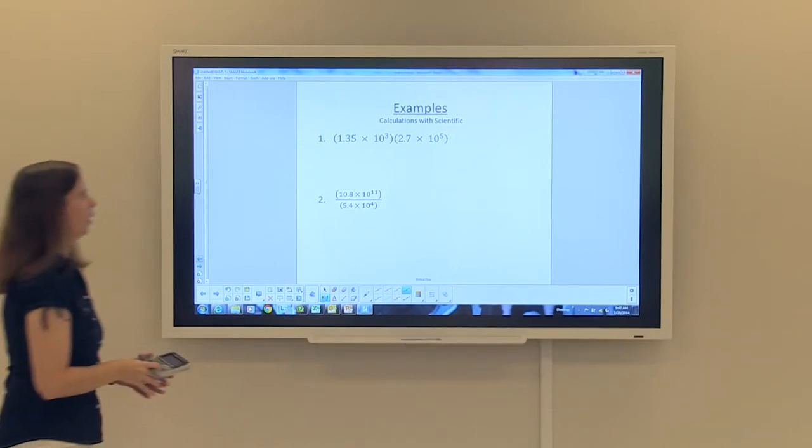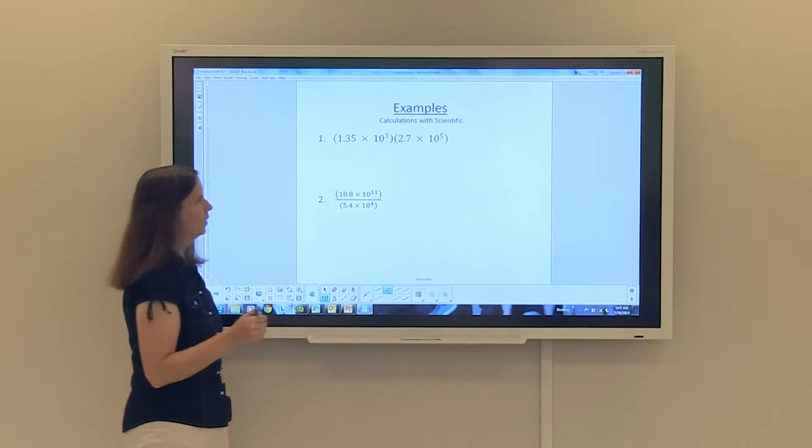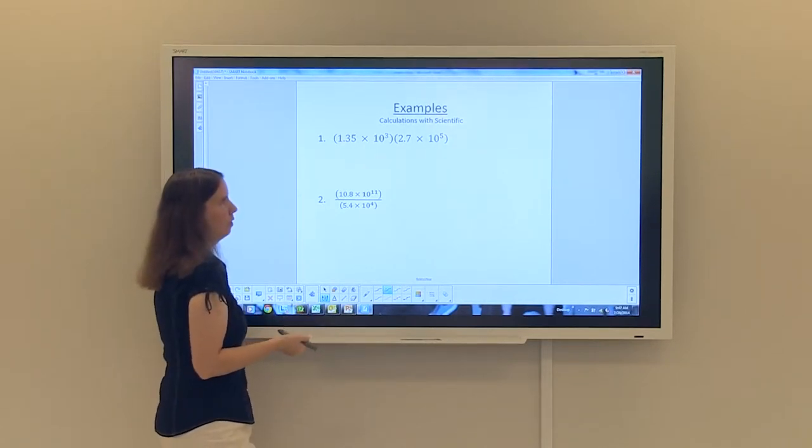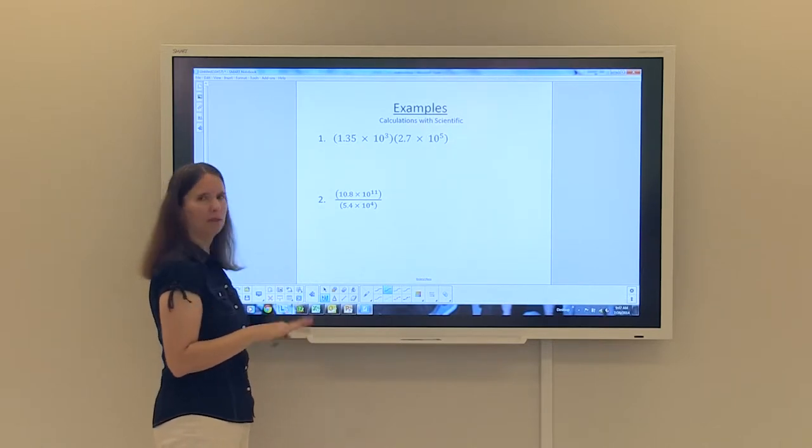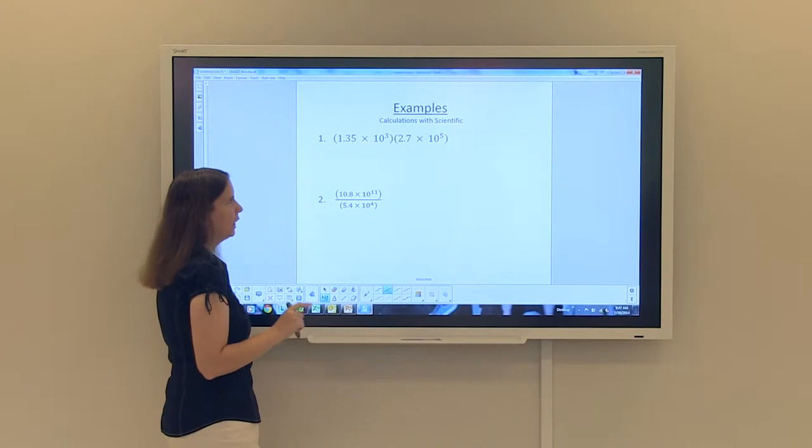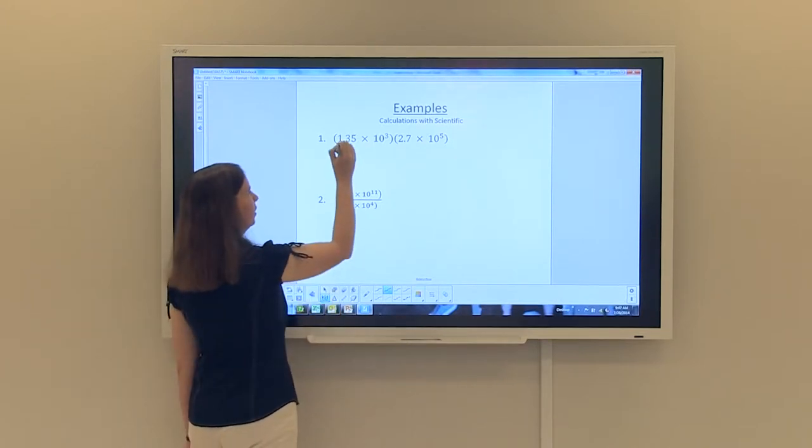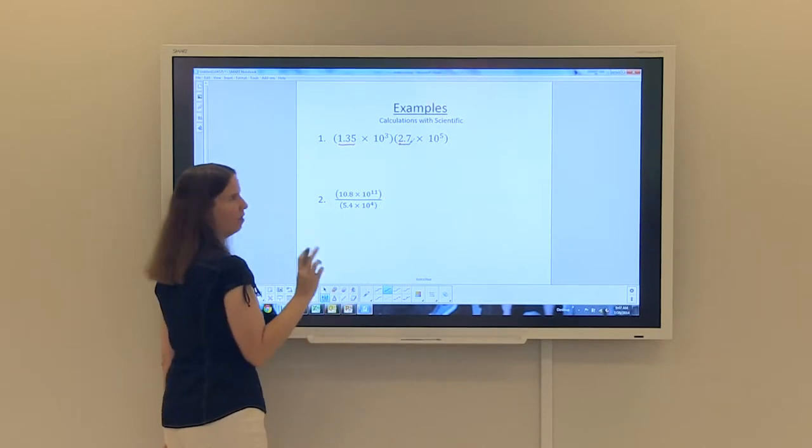So in the first problem, we have 1.35 times 10 to the third, which is in scientific notation, times 2.7 times 10 to the fifth, which is also in scientific notation. Lots of ways to do this problem. The easiest way is to group like things together.